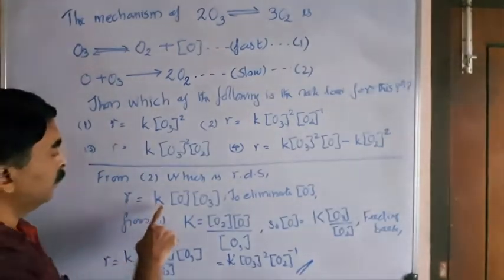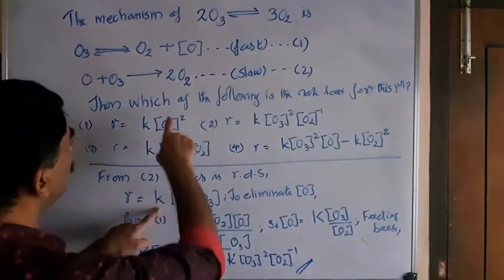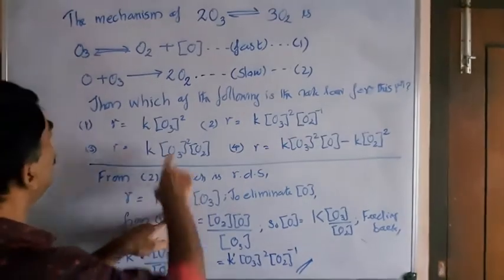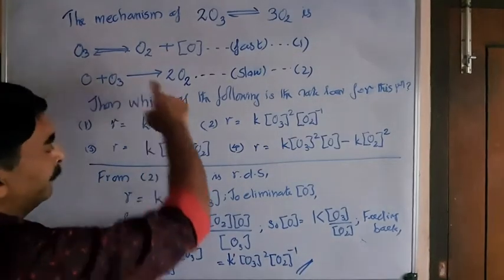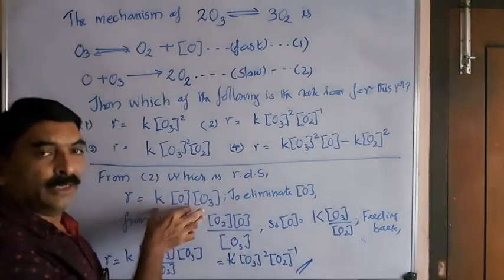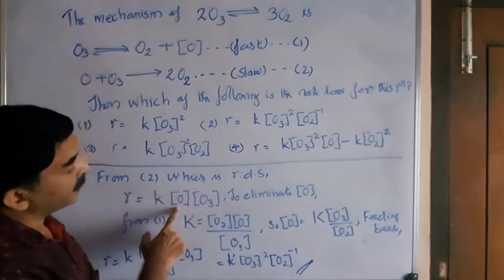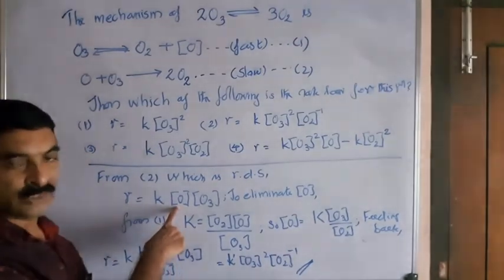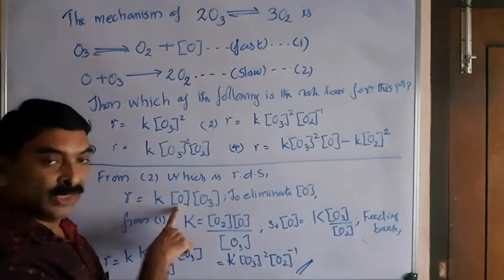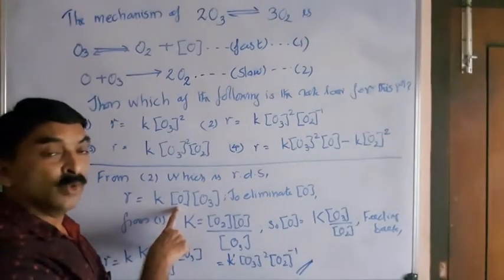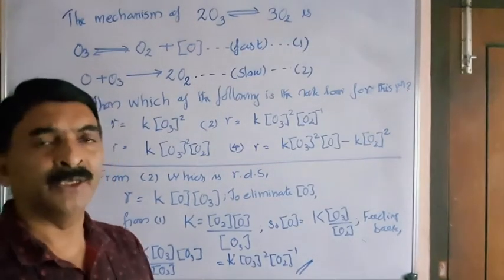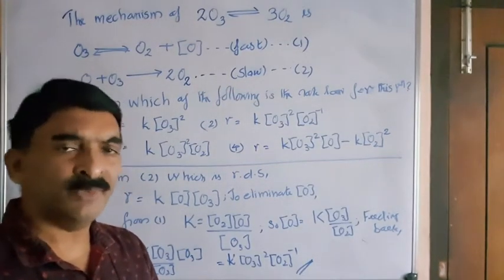So by looking at this, we are going to write the rate of concentration of O3. See, this is a correct rate law, but it has a problem that it is involving a thing that is not a raw substance we have started with. It has been formed during the reaction. So its concentration cannot be determined very easily. So it is better that we avoid it.